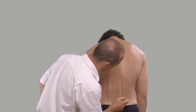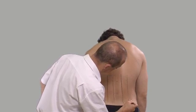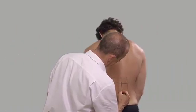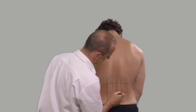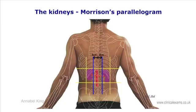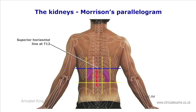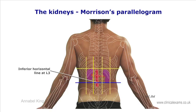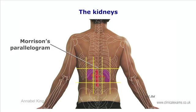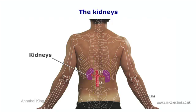The kidneys can be mapped by drawing two vertical lines and two horizontal lines on either side of the spine. The medial vertical lines are three centimeters from the spine, and the lateral vertical lines are six point five centimeters from the spine. The superior horizontal line is drawn at the level of T12 and the inferior horizontal line at the level of L3. This is known as Morrison's parallelogram.